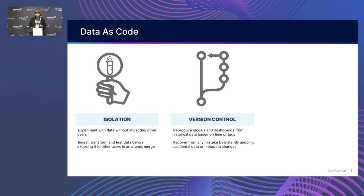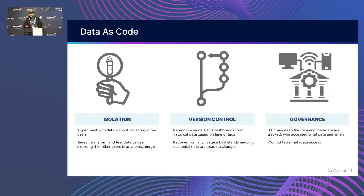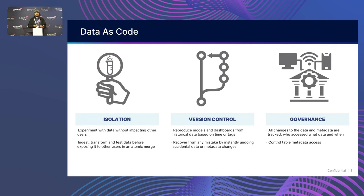We want version control too. We make mistakes, and nothing is worse than spending the weekend backfilling data. With version control, you can just roll back your mistakes — go back to a previous commit, just like you can with code. And then there's governance: with Git, only certain people are allowed to push to certain branches, only some people are allowed to authorize a merge. Having visibility into who's doing what and being able to control that has a lot of benefit.